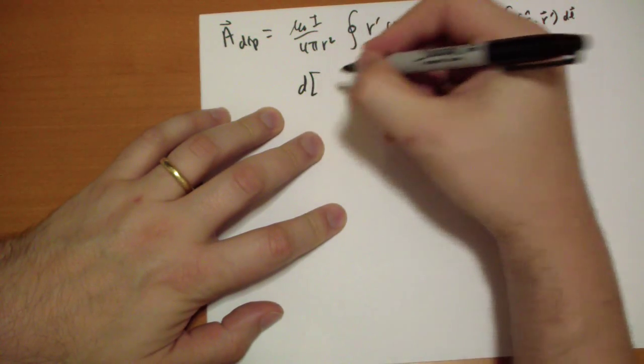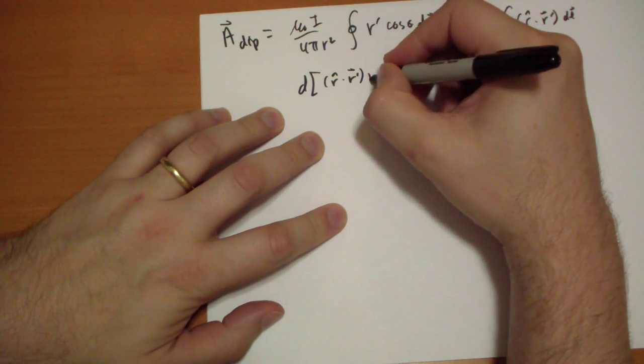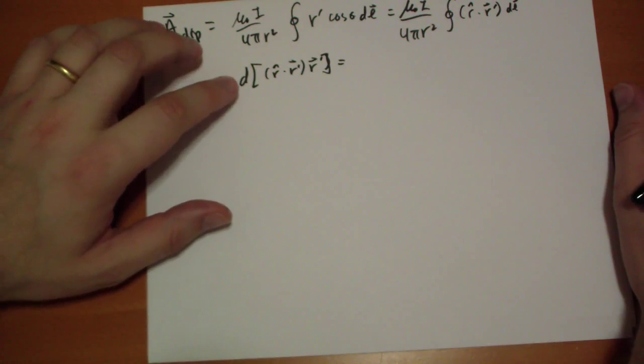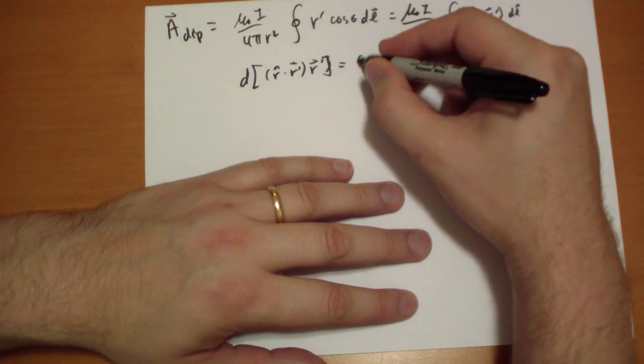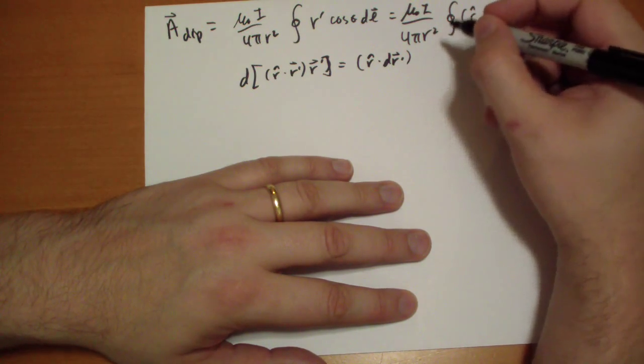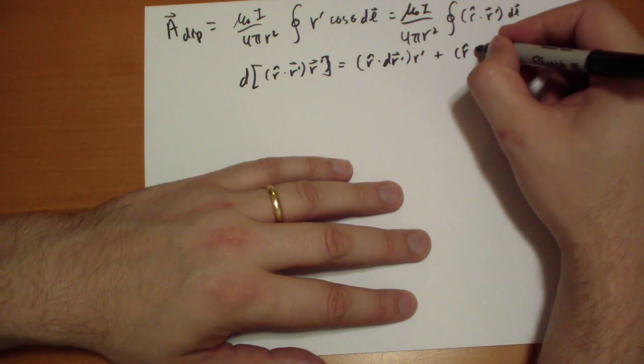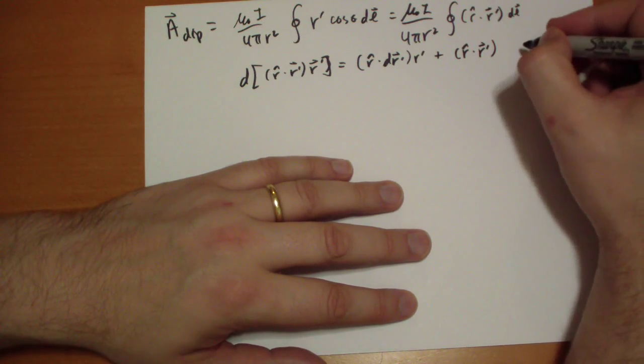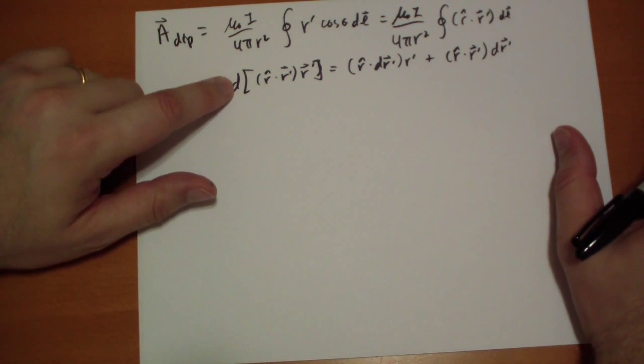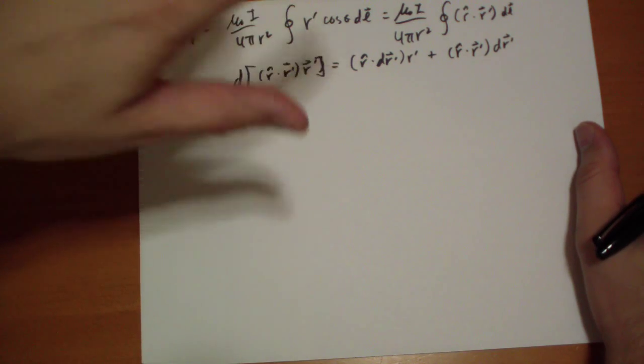So, the differential of r hat dot r prime vector squared, so a tiny change in this, what is this equal to? Well, that's just r hat dot r prime vector d(r prime) plus r hat dot r prime vector dr prime vector. Okay, what did he do here? Well, he just took the derivative of this, this one's constant. We're not changing r as we go through this integral, we're changing r prime. So, it's the derivative of this times the derivative of that, plus the derivative of that.